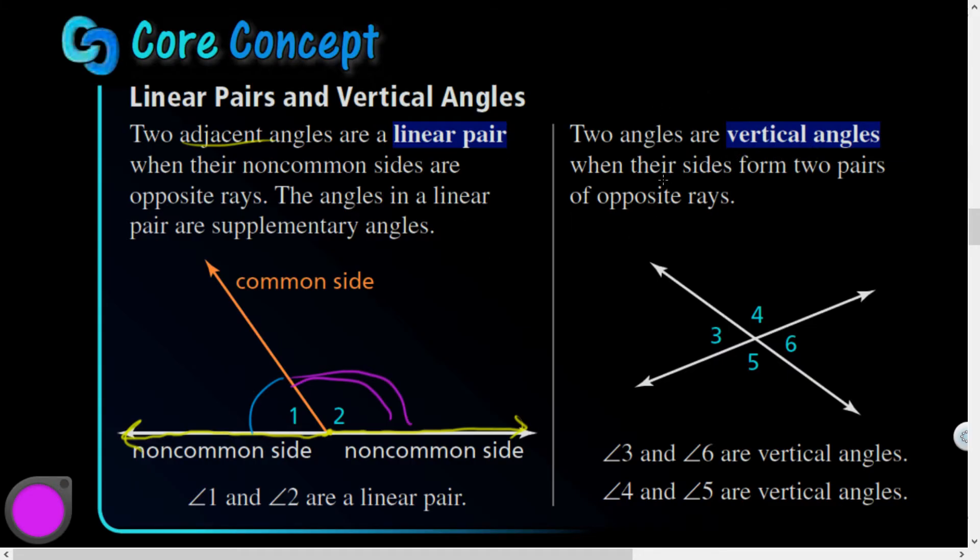And then two angles are vertical angles when they form two pairs of opposite rays. So this angle here and this angle here are vertical angles to one another. And this angle here and this angle here are vertical angles of one another. They're kind of like opposite sides of an intersection. You could think about it like that.